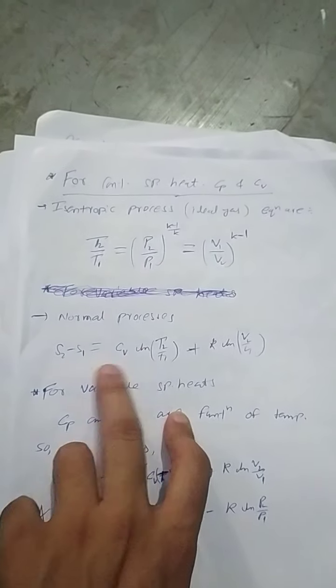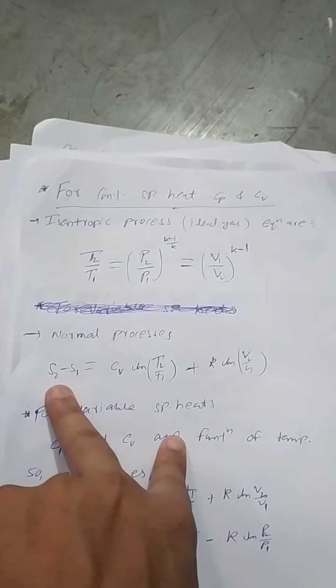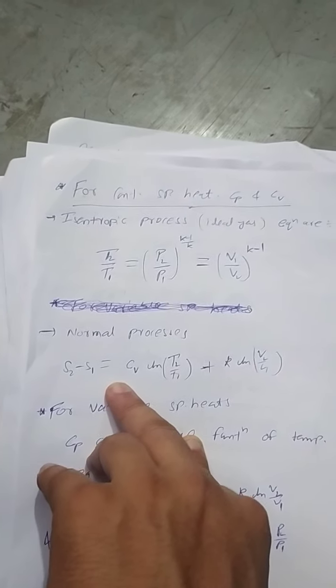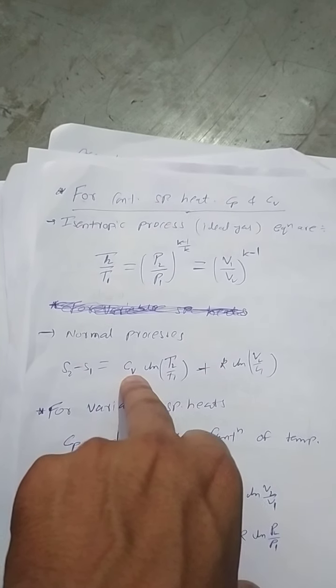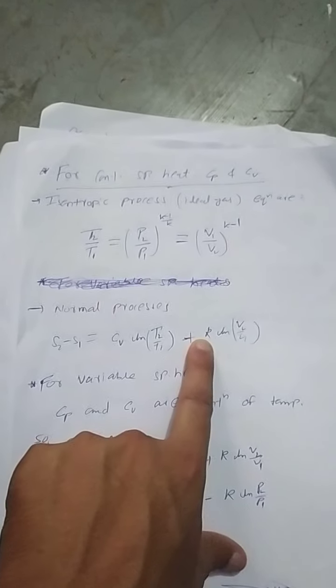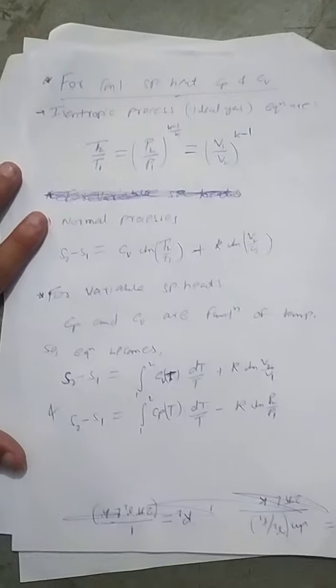For normal process, this equation gives the entropy change from initial to final position. cv is specific heat at constant volume, r is gas constant of air. Now let's move on to the main topic.